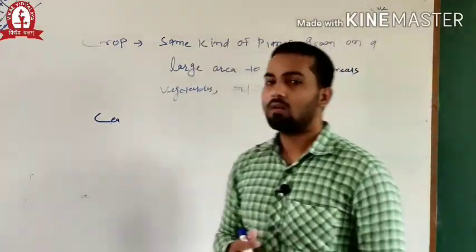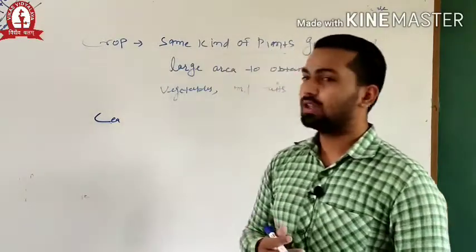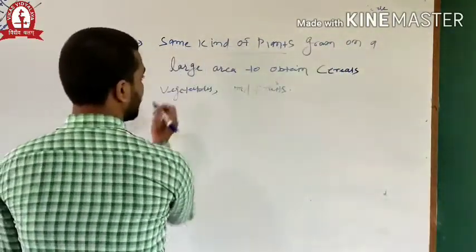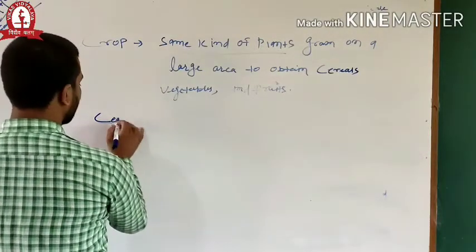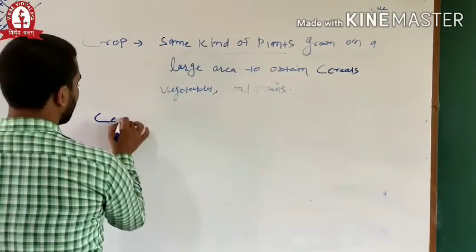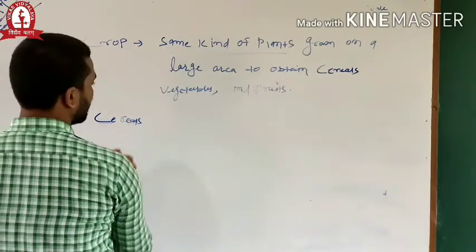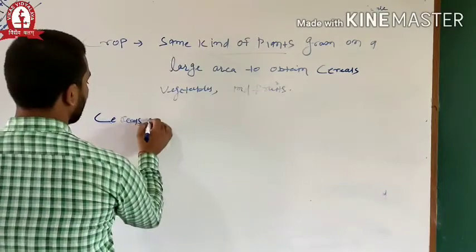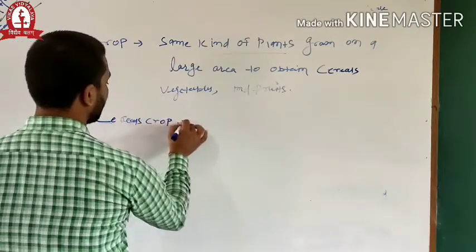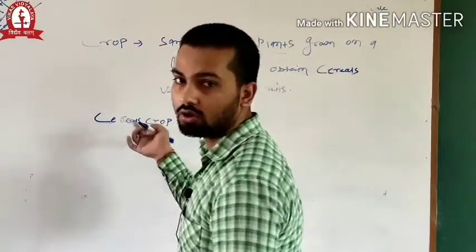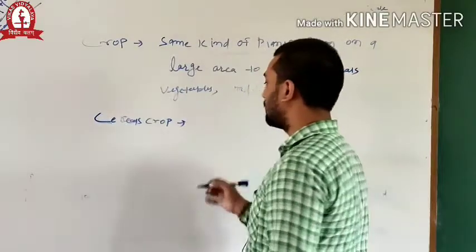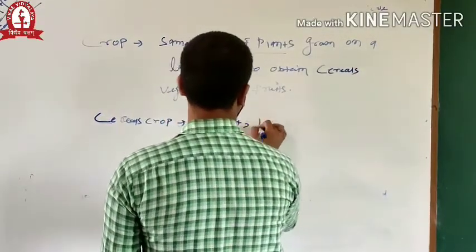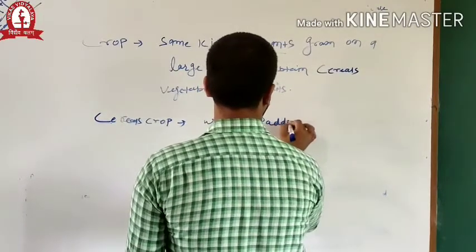Now we will take some examples of crop. There are so many examples of crop. First one is cereal crop. Cereal crop is also known as grain crop like wheat, paddy.